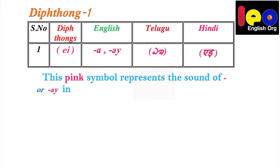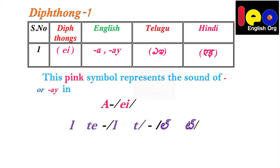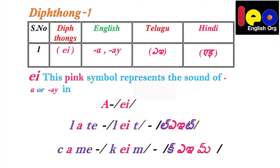Diphthong 1. This pink symbol represents the sound of A in 'A', A in 'late', A in 'came'. So the sound of this particular EI stands for the real pronunciation of the English alphabet A. It is not 'A', it is 'A'.